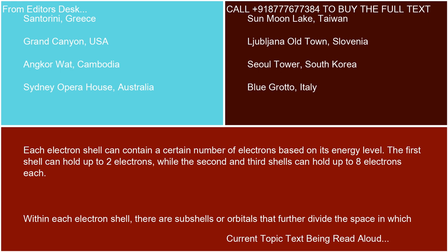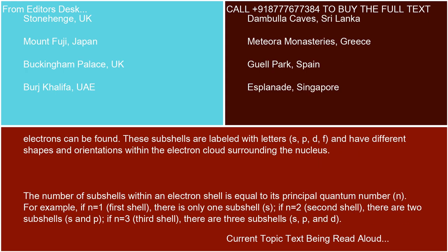Within each electron shell, there are subshells or orbitals that further divide the space in which electrons can be found. These subshells are labeled with the letters S, P, D, and F, and have different shapes and orientations within the electron cloud surrounding the nucleus.